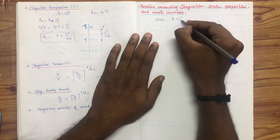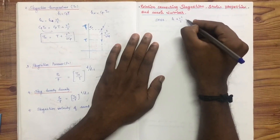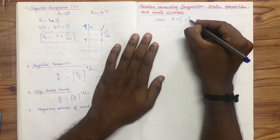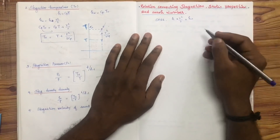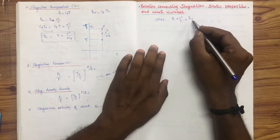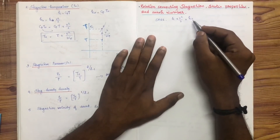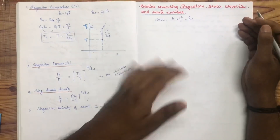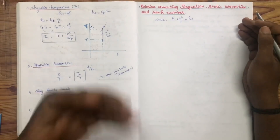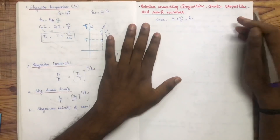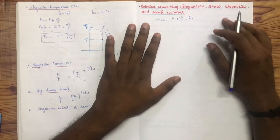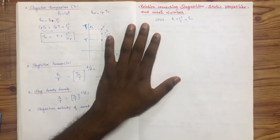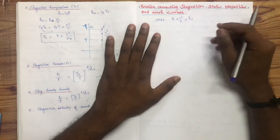The steady flow energy equation is H plus V squared by 2 equals H0. We will connect the stagnation enthalpy H0 to Cp and define stagnation enthalpy. Stagnation enthalpy and static enthalpy are distinct properties.